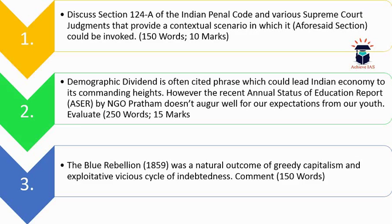You have to evaluate this statement — basically discuss what is the value of the demographic dividend, what does the ASER report say, and how we can change the scenario. The third question is: The Blue Rebellion of 1859 was the natural outcome of greedy capitalism and the exploitative vicious cycle of indebtedness — comment. This is a question from the static part; we are currently covering Modern India this week. The word limit is 150 and marks allotted are 10.